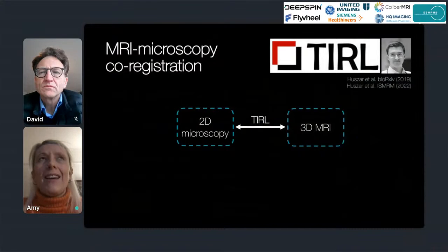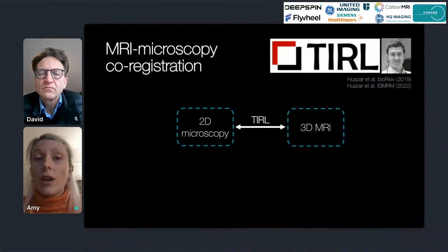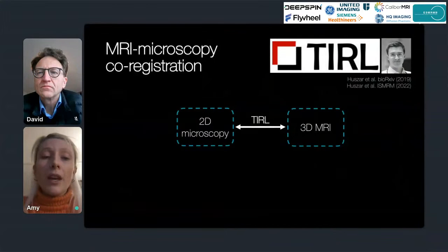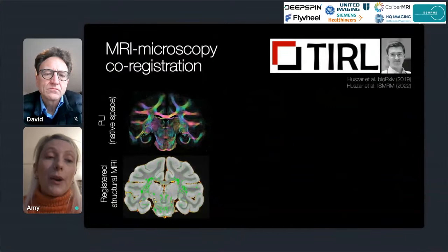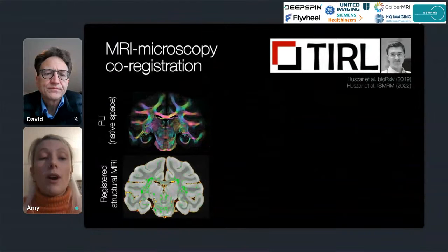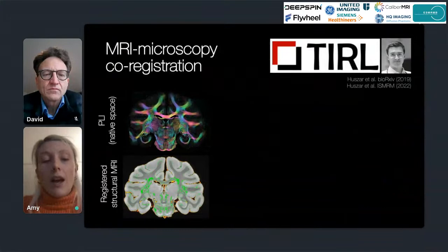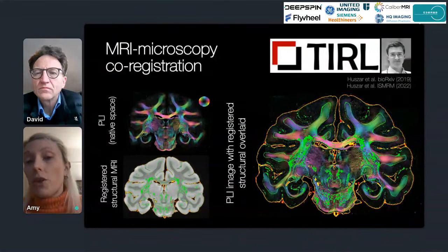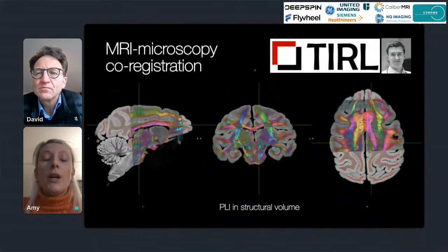MRI–microscopy co-registration has a large number of degrees of freedom and is highly difficult. In Big MAC the co-registration was achieved using TIRL — the Tensor Image Registration Library — developed by Isfan Huszar from our group. TIRL allows us to take any 2D microscopy section and register it into our 3D MRI volumes. The output shows excellent correspondence of tissue boundaries between the native polarized light image and the registered structural MRI, using green for the white–gray matter boundary and orange for the tissue outline.